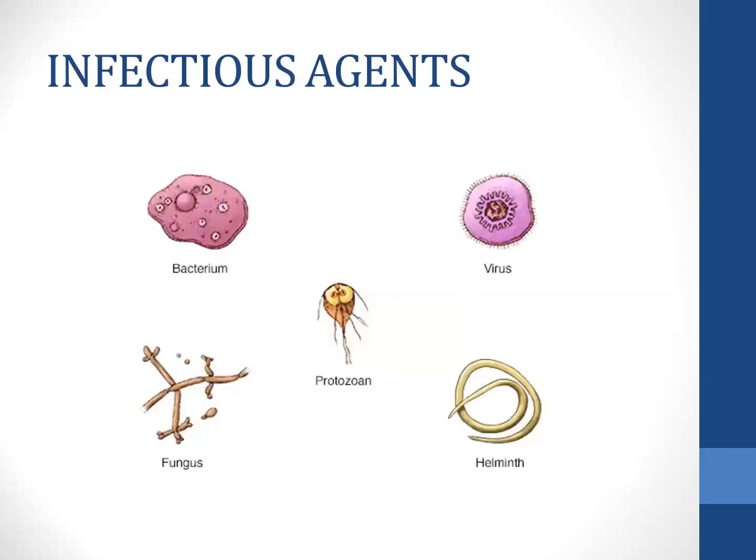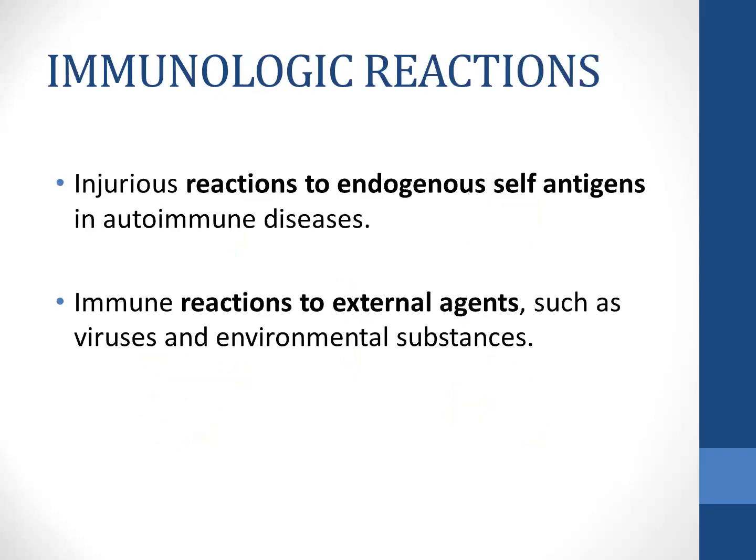Infectious agents causing cell injury include bacteria, viruses, fungi, protozoa, and various kinds of worms. Immunological reactions can also lead to cell injury, and these reactions may be to endogenous cell pathogens leading to autoimmune diseases, or they can be reactions to external agents like viruses and environmental pollutants.